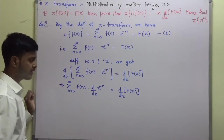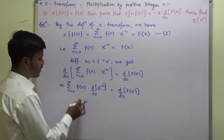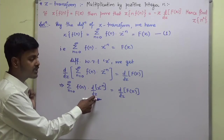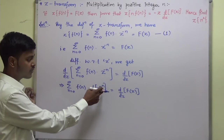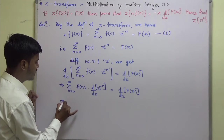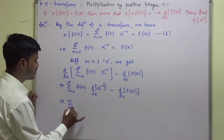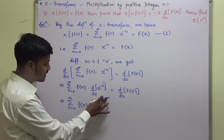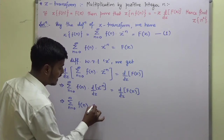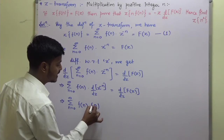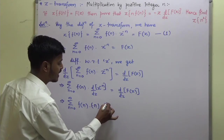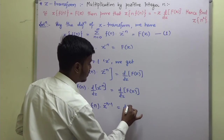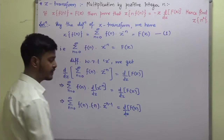Since f(n) is a function of n, it is constant with respect to z differentiation. So I differentiate only z to the power minus n. This gives: summation from n=0 to infinity of f(n) into (minus n) times z to the power (minus n minus 1) equals d/dz of F(z).